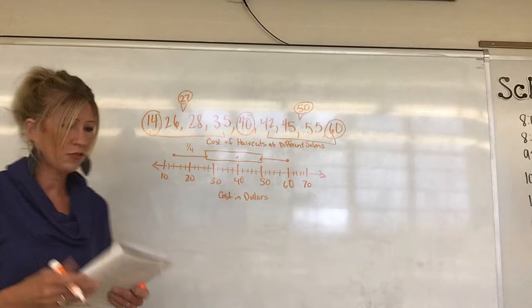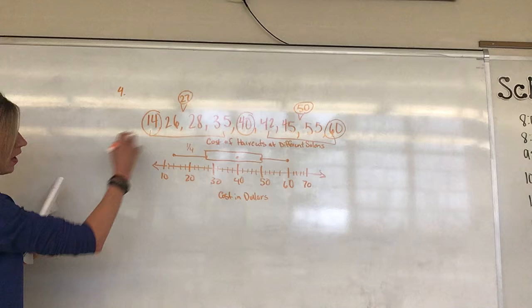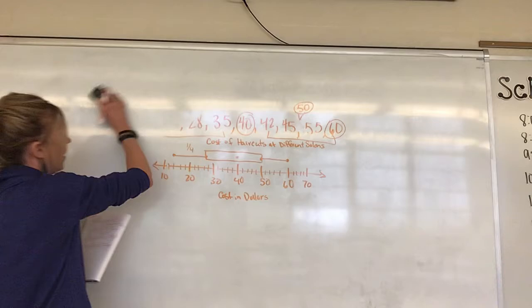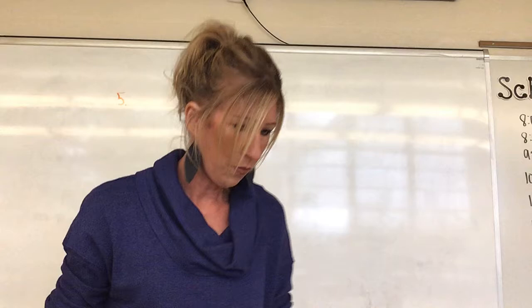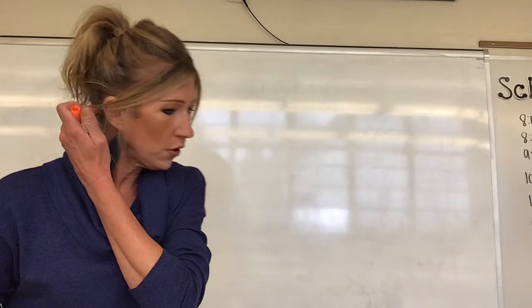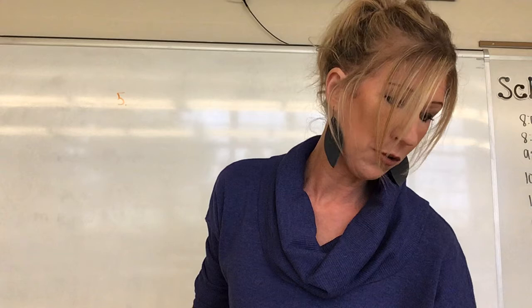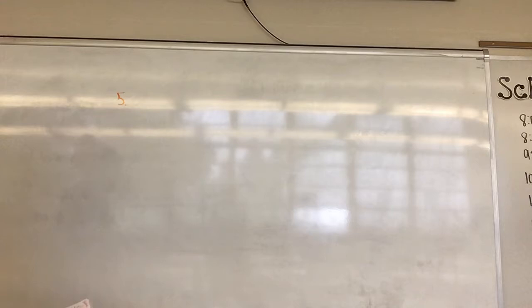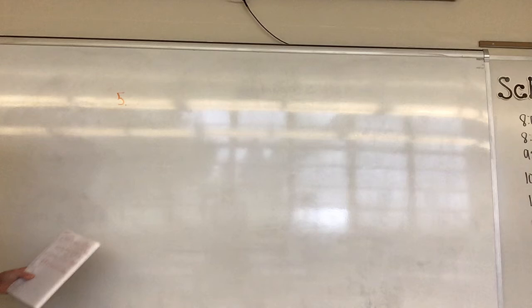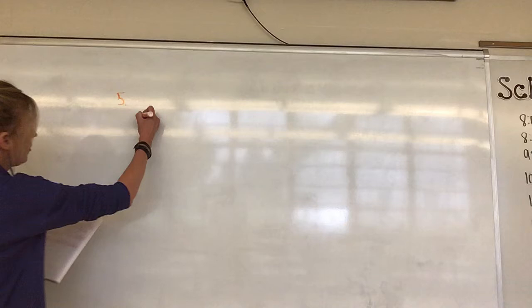That was number four — you needed to say there were nine observations and then create the box plot. Now let's go to number five. This is about the number of items in a grocery cart. There were a few more data items this time — I counted 14. Let's double-check: one, two, three, four, five, six, seven, eight, nine, ten, eleven, twelve, thirteen, fourteen. Yes, 14 pieces of data.